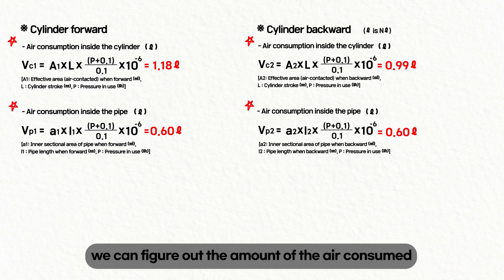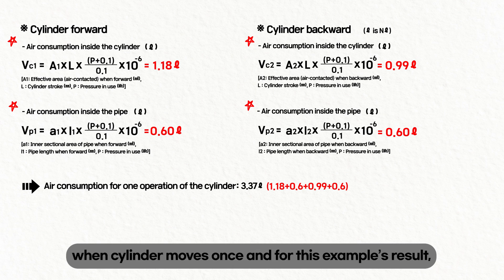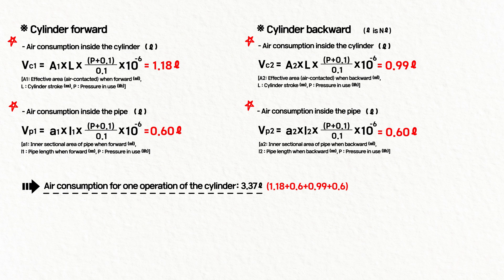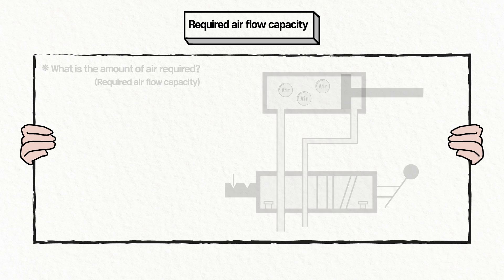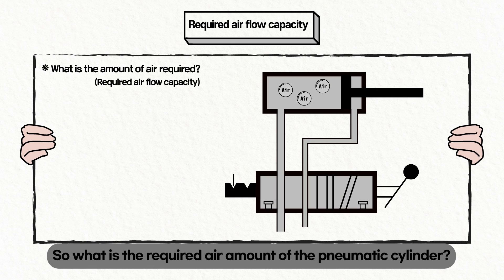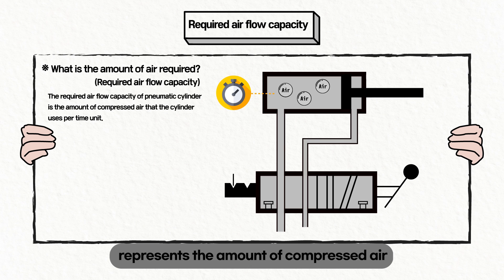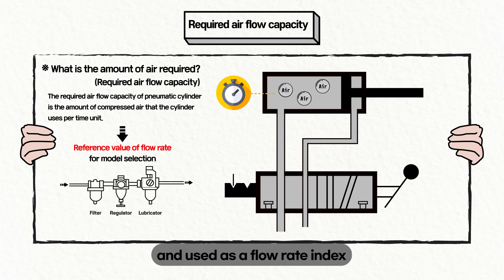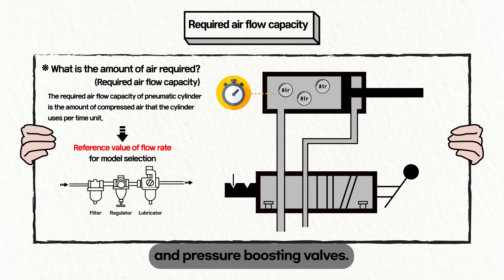Adding all values together, we can determine the total air consumed when the cylinder moves once. For this example, the double-acting cylinder's air consumption is 3.37 liters. So what is the required air amount of a pneumatic cylinder? The required air amount represents the amount of compressed air the cylinder uses per unit time, and is used as a flow rate index value for choosing the model size of air units and pressure boosting valves.